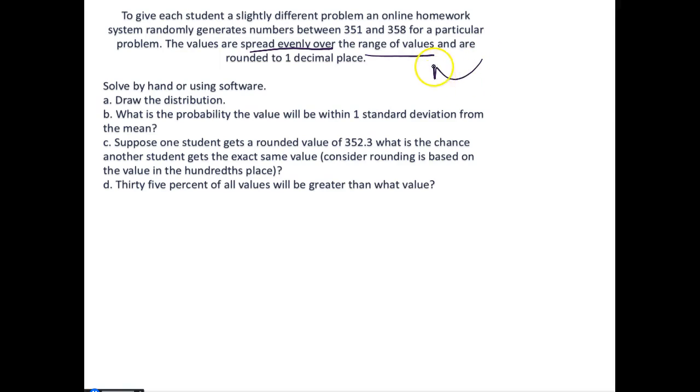This is important, because now we know that the values are spread evenly over that range, which means this is going to be a uniform distribution or uniform random variable where a equals 351 and b equals 358.